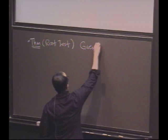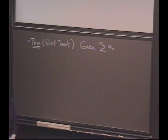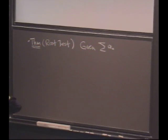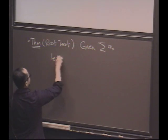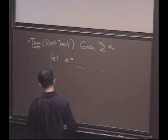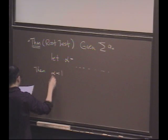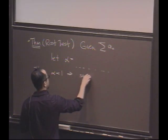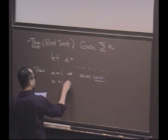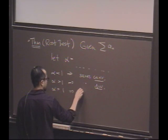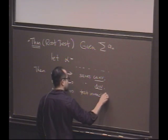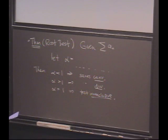If you're given a series, the sum of a sub n — anybody remember how you test using the root test whether a series converges? Let alpha equal something — I'll fill in the blank in a minute. Then, if alpha is less than 1, the series converges. If alpha is greater than 1, the series diverges. And if alpha equals 1, the test is inconclusive. Does that ring a bell? What is alpha? Anybody remember the root test criterion?